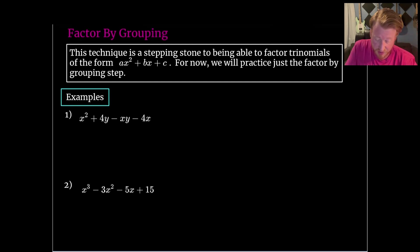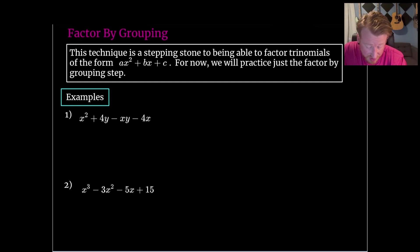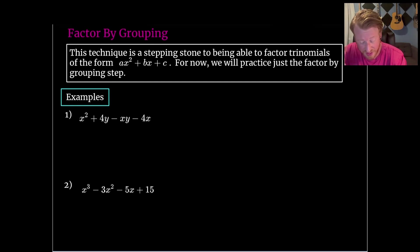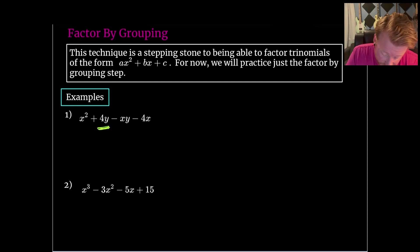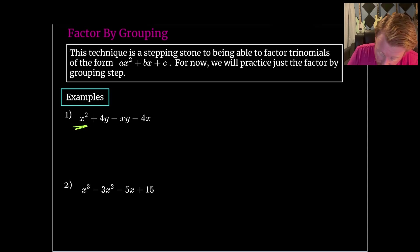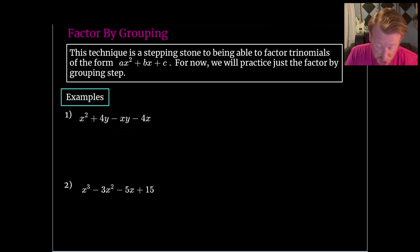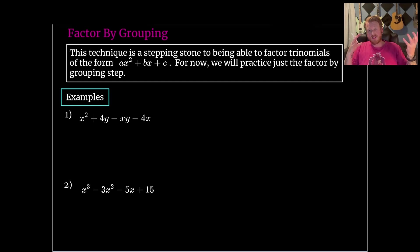For this first example, we can see there are four terms. It's always a good idea to look for a GCF first. I can see there are some x's, some 4s, and some y's floating around, but there's nothing in common for every term. The second term doesn't have an x, so there's no x I could factor out. This term is missing a 4 and a y, and there's no 4 on this one either. So there's no GCF.